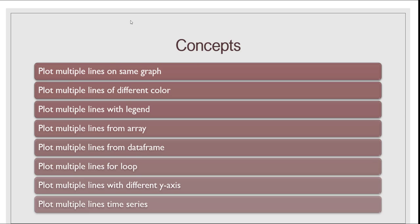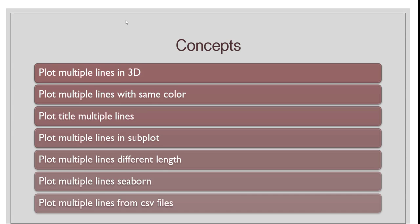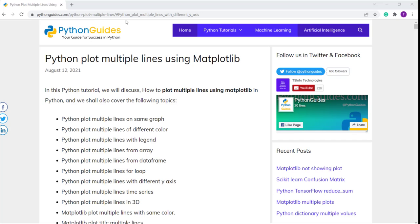First we will learn to plot multiple lines on the same graph. Next, multiple lines of different color, then with legend, from array, from a DataFrame, using a for loop, with different y-axis, in a 3D graph, with the same color, with title, in a subplot, with different length, using the seaborn library, and finally from a CSV file.